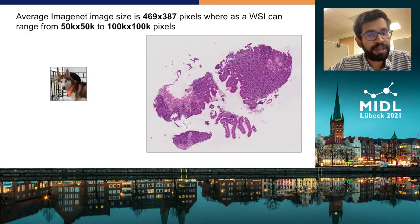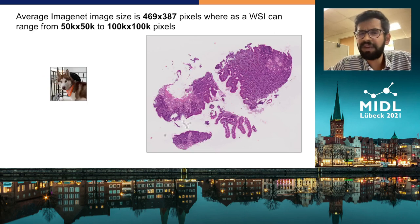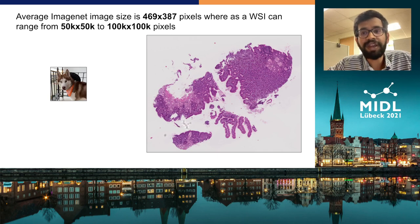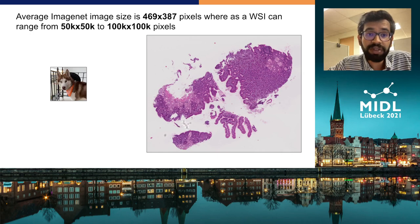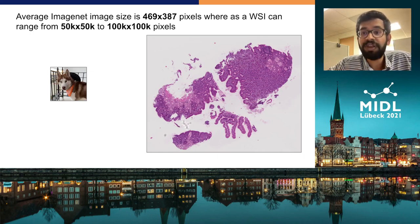Here we can see two examples — one from ImageNet, another from a WSI dataset. An average ImageNet image size is 500×400px, whereas a WSI can range from 50k×50k px to 100k×100k px, rendering traditionally used approaches unusable. Downsampling images leads to loss of relevant cellular and structural details pertinent for diagnosis. So for tackling this problem, small patches are extracted from WSI of comparable size to ImageNet and are used for training deep learning models.